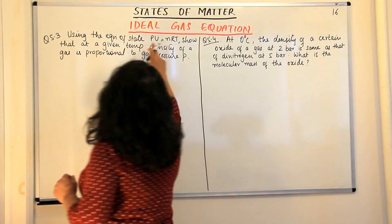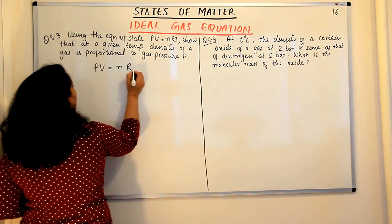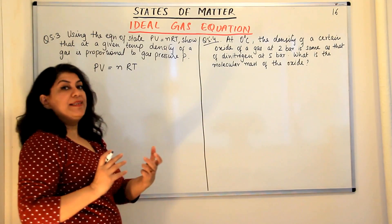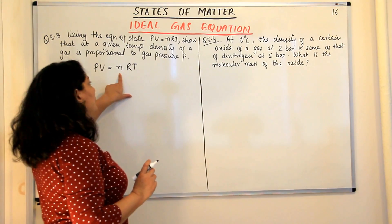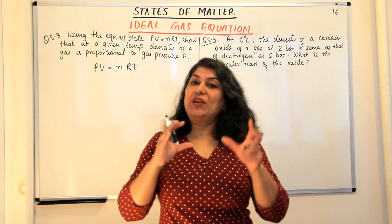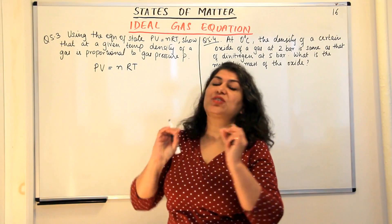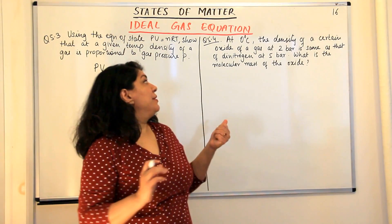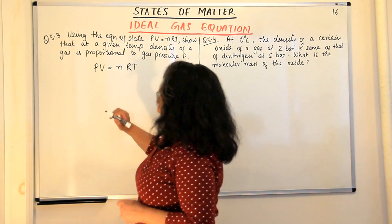We've been given PV = nRT as our equation of state, the ideal gas equation. Now, the number of moles — if you want to convert it into density — density is mass per unit volume. And what is the number of moles? Number of moles is mass of a given gas divided by the molar mass. So if we put mass in here somehow, and volume we already have, we would be able to get an expression for density. We've already done this in the theory in video number 14 where I explained the ideal gas equation.